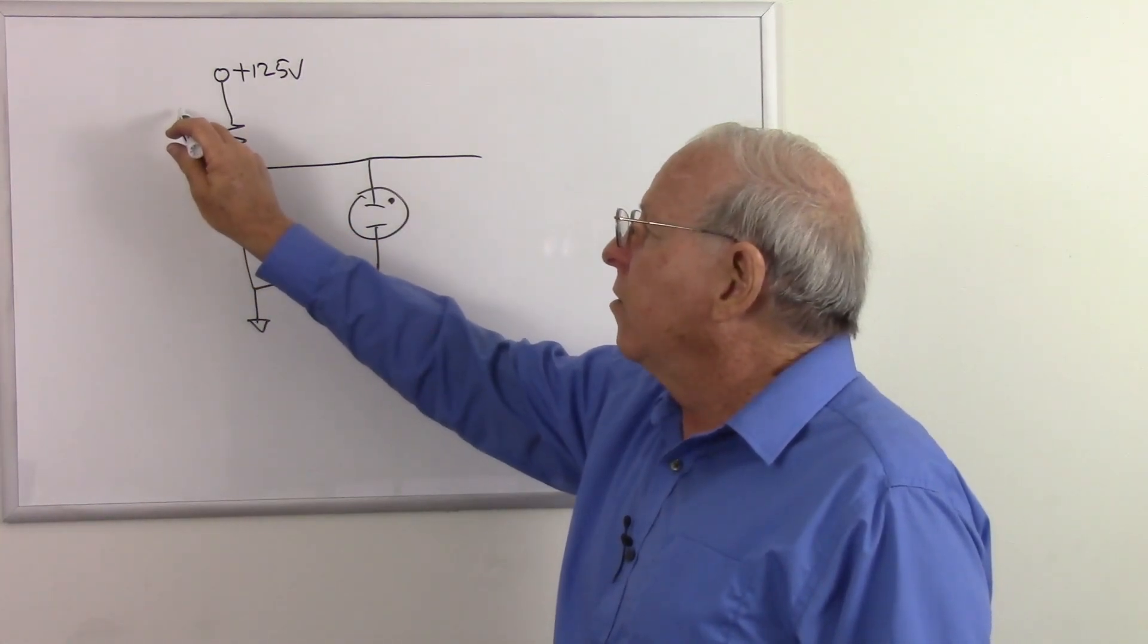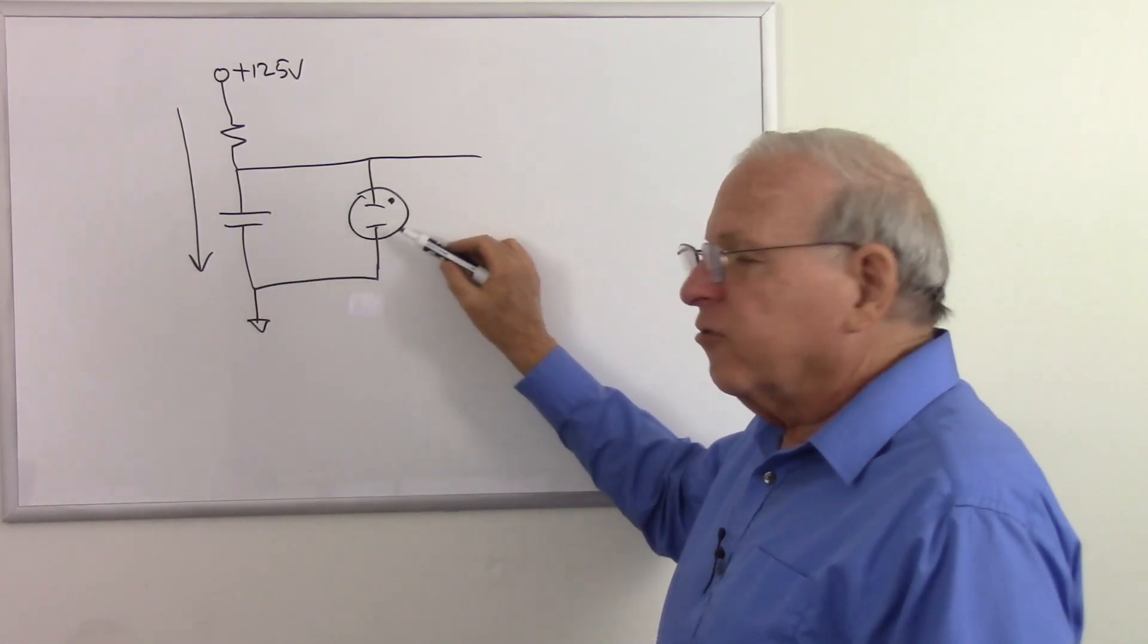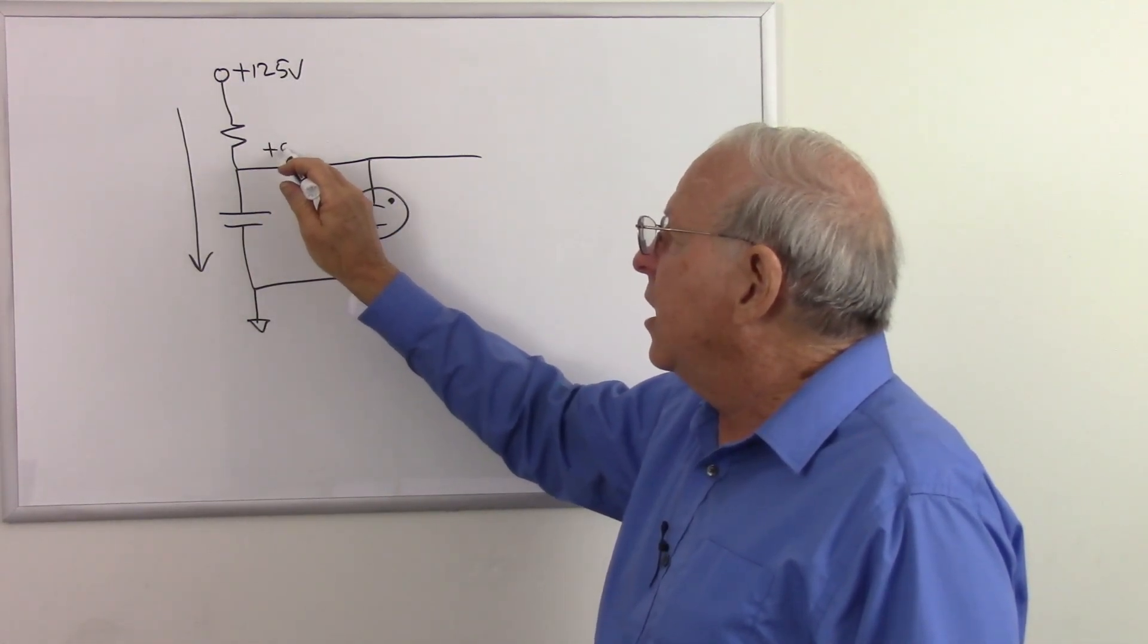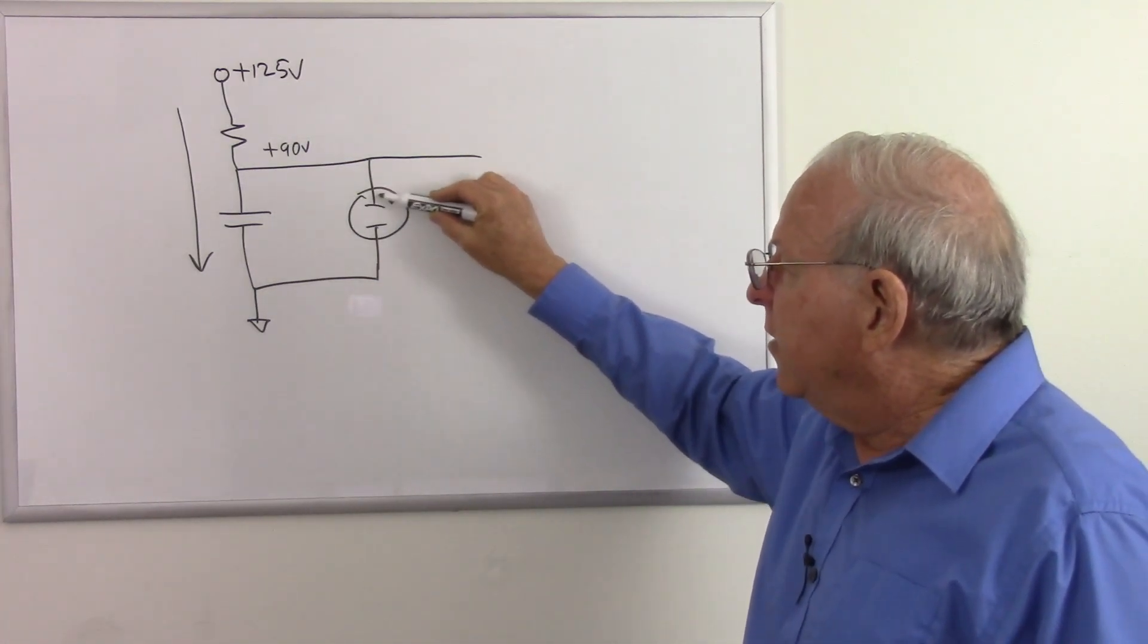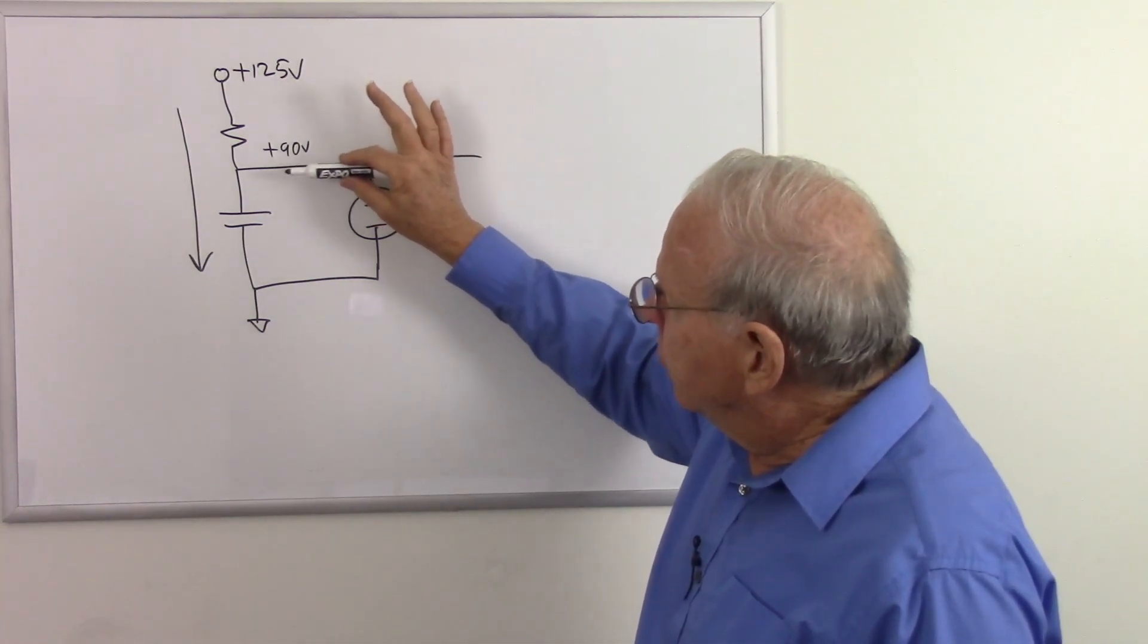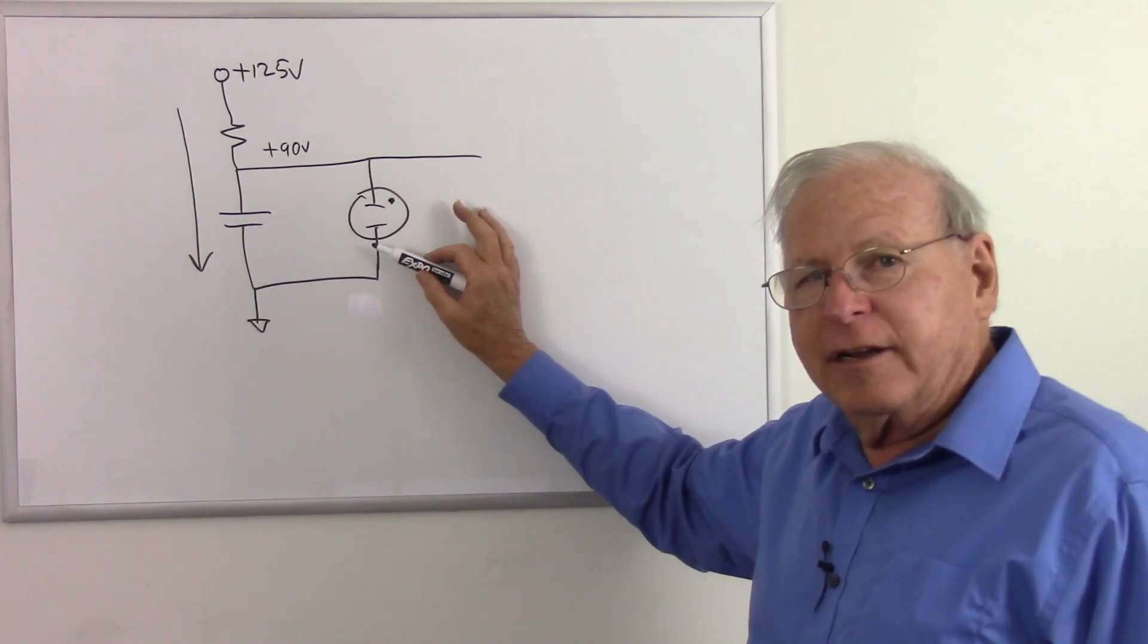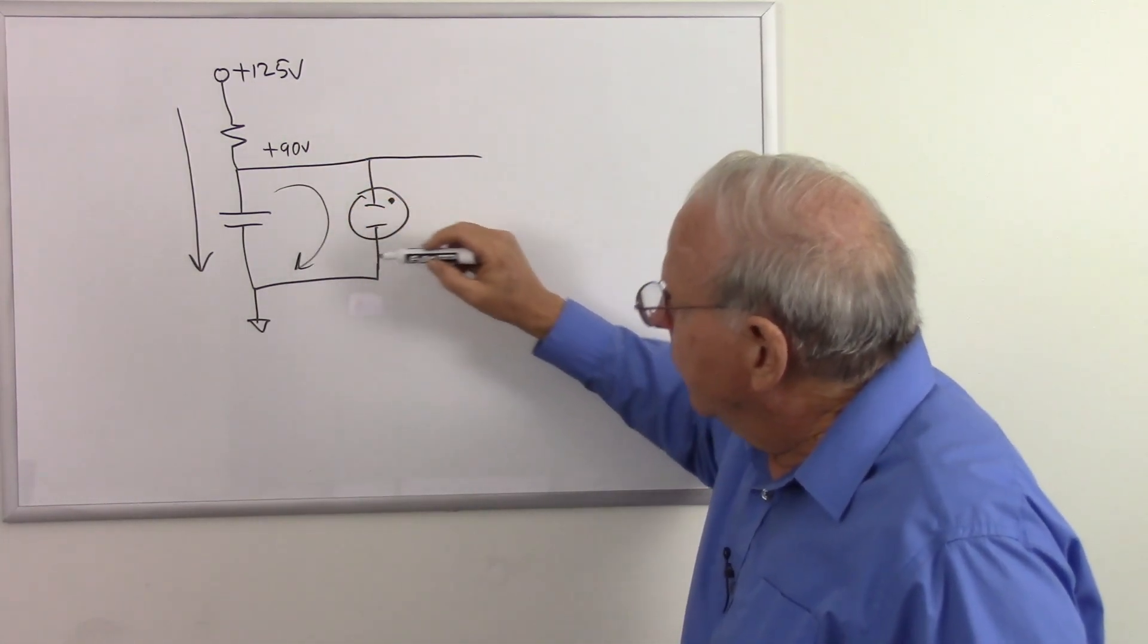So what's going to happen is, of course, we're going to have a current flowing through the capacitor as it charges. This also looks like a capacitor, but a much smaller one. And as this capacitor charges, when it gets up to approximately plus 90 volts, it's going to ionize the gas inside the neon tube. When that gas ionizes, it becomes conductive. So up to this point, this was non-conductive, so the capacitor was allowed to charge. And now when this reaches 90 volts, the gas becomes conductive, and it will now discharge the capacitor through the light.